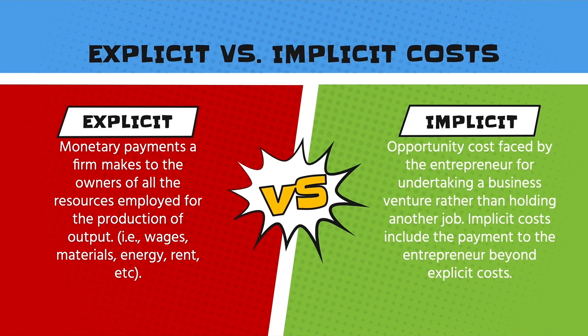Explicit costs are the payments a firm needs to make for all resources used in production — this includes wages, materials, rent, raw materials, and utilities, whether fixed or variable. Implicit costs are the opportunity costs when the entrepreneur considers what else they could have been doing with their time instead of starting and running this business. The opportunity costs include the payment to the entrepreneur beyond explicit costs, as measured by how much they could have earned doing something else.